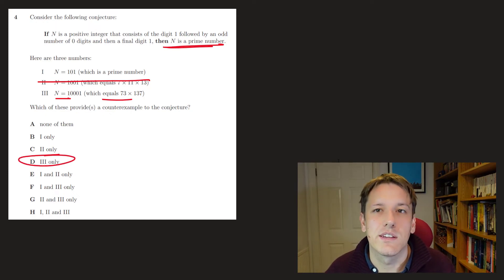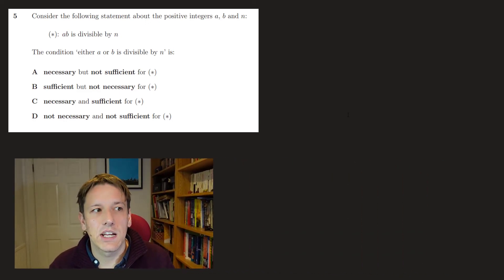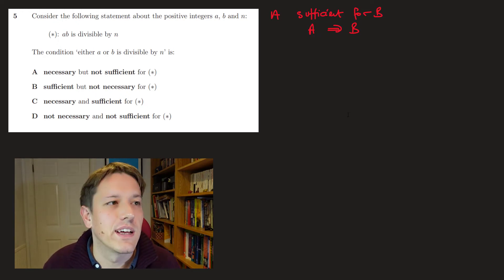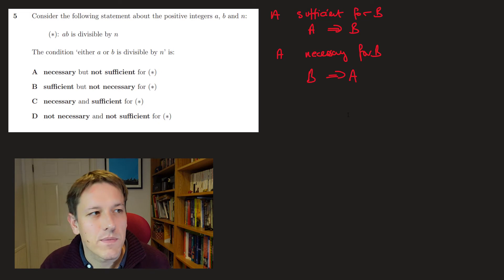Question 5 says, consider this statement about the positive integers a, b, and n: a times b is divisible by n, and we want to say the condition either a or b is divisible by n. Now, is it necessary or sufficient, both or neither? So a condition a is sufficient for b if a implies b. So here a is sufficient for b. So what that means is that if a is true, that's enough to make b true. That's where that language comes from. And if a is necessary for b, that means the other way around, that b implies a. So that means that whenever b is true, a necessarily has to be true. So we've got to think about this statement.